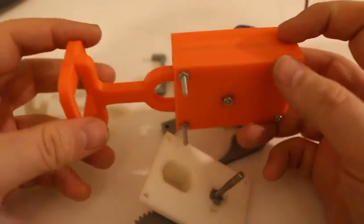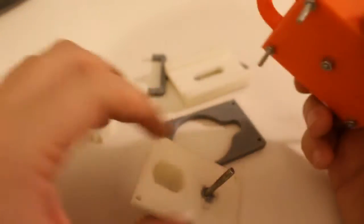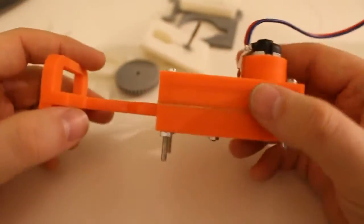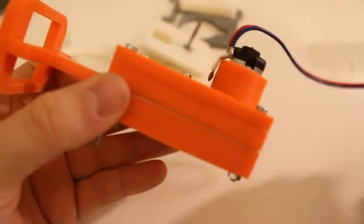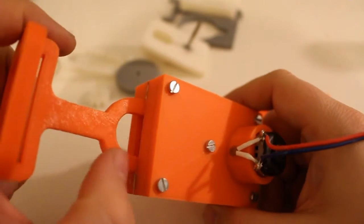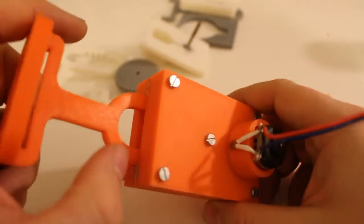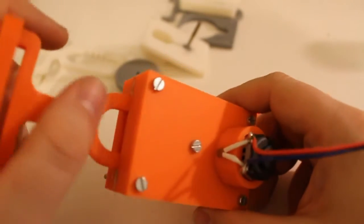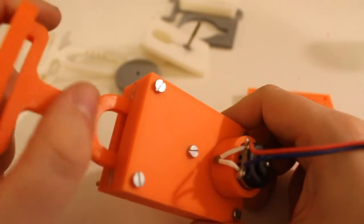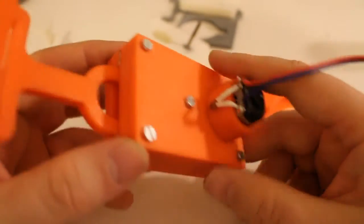Up until yesterday or the day before, it all changed. I reprinted the files. I had to redesign them. I filed it down, put some sandpaper on it and then used some acetone to melt the ABS to get it smooth. And it works quite well.